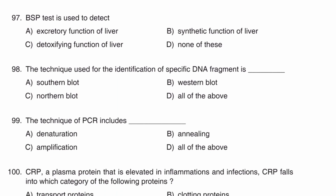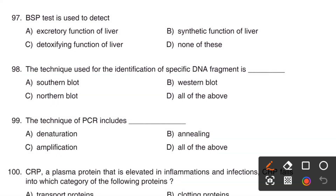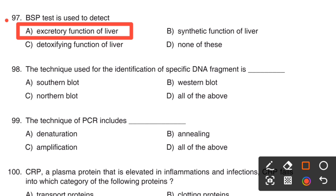Next question. The BSP (Bromosulfonaphthalein) test is used to detect: Option A, Excretory function of liver. Option B, Synthetic function of liver. Option C, Detoxifying functions of liver. Option D, None of these. The Bromosulfonaphthalein test is used for the excretory function of liver. The right answer is Option A, Excretory function of liver.